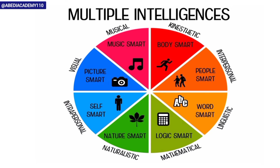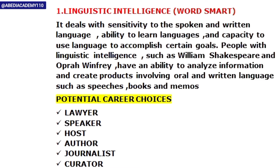This picture symbolizes the multiple intelligences: if you understand the rhythms of music, you are music smart; kinesthetic intelligence makes you body smart; interpersonal intelligence makes you people smart; linguistic intelligence makes you word smart; mathematical intelligence makes you logic smart; naturalistic intelligence makes you nature smart; intrapersonal intelligence makes you self smart; and visual intelligence makes you picture smart. These are all nine intelligences.